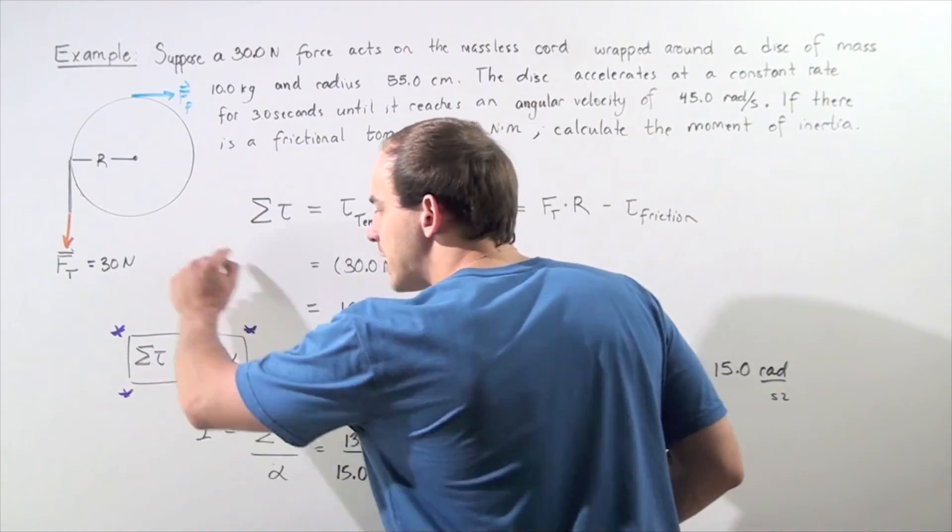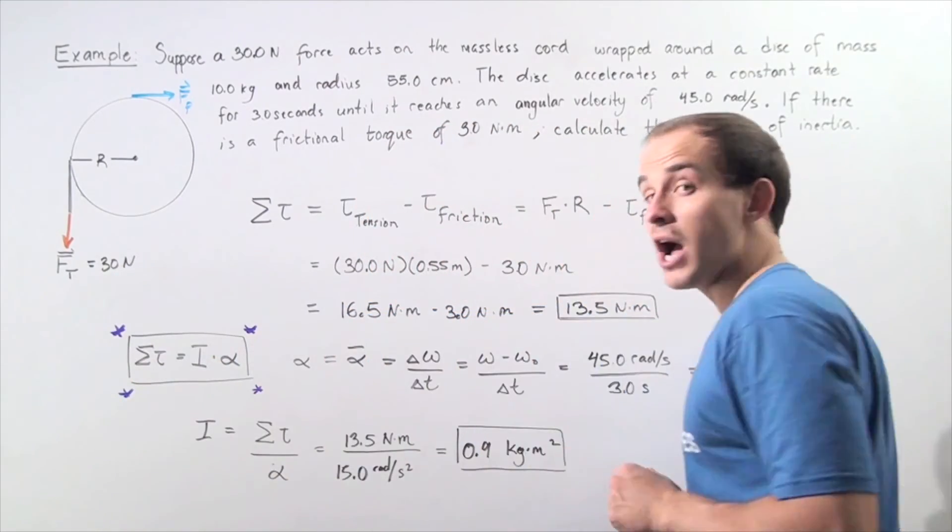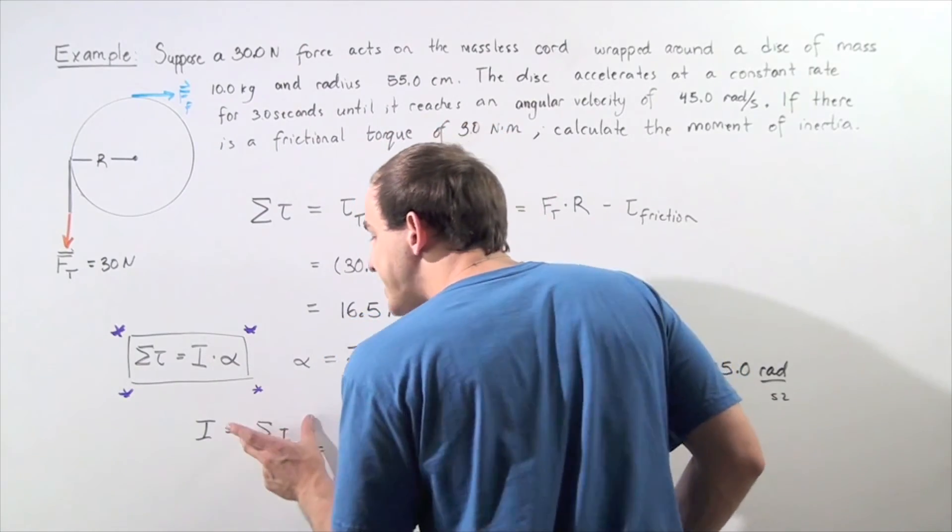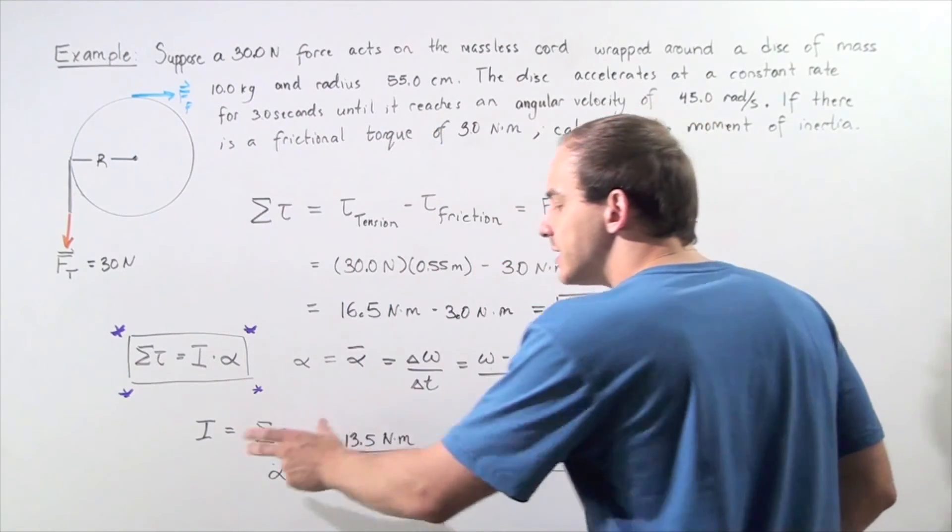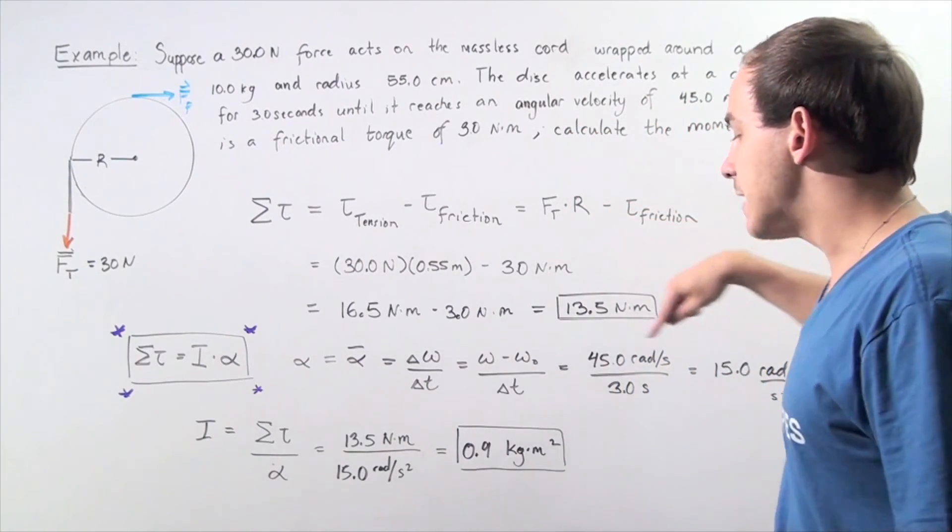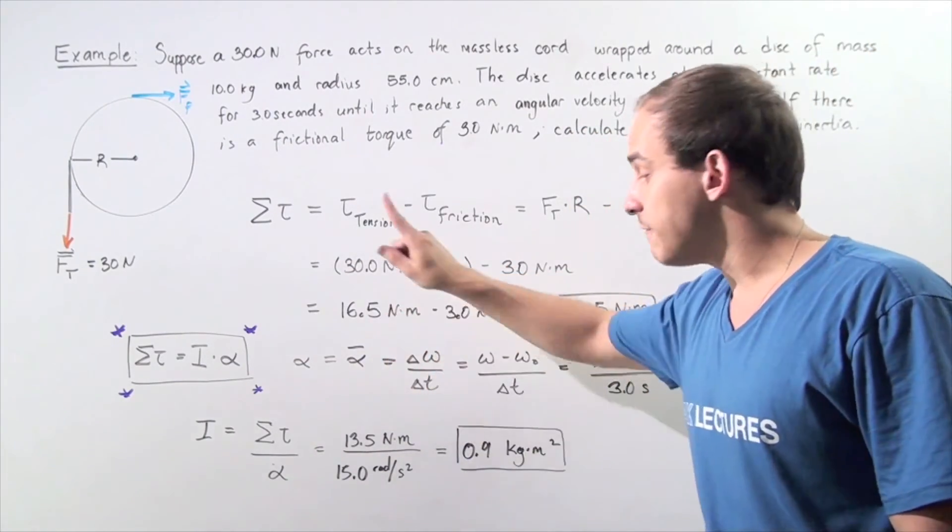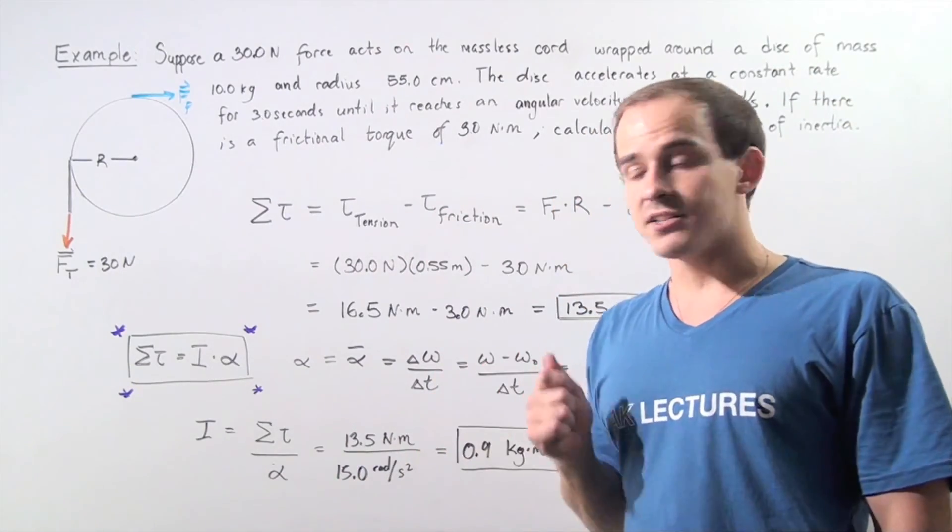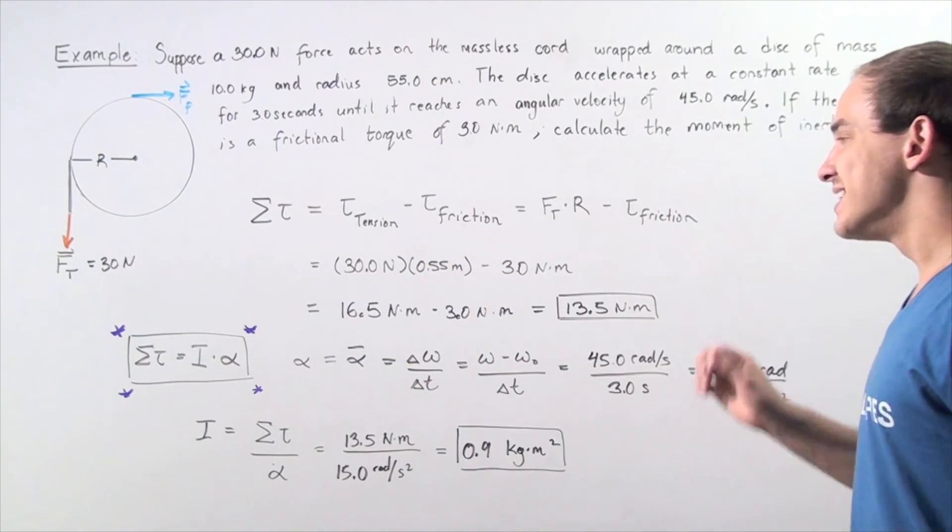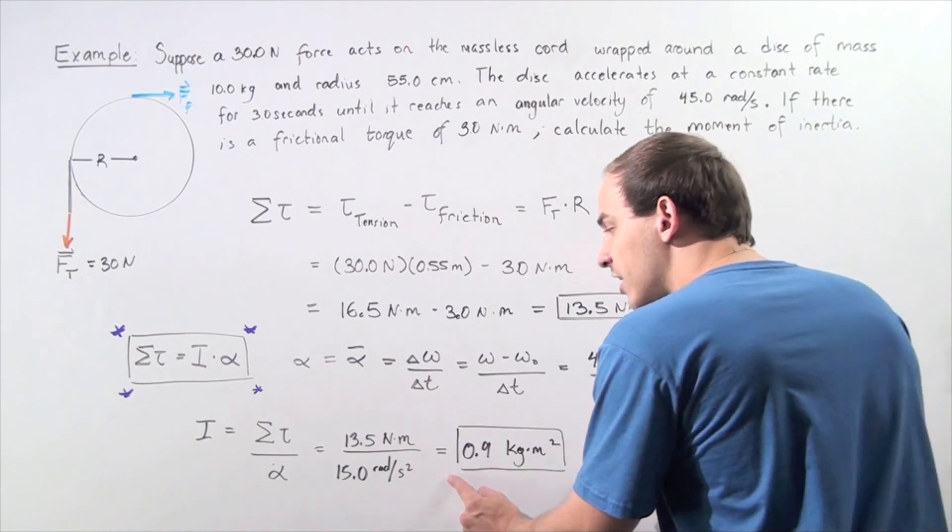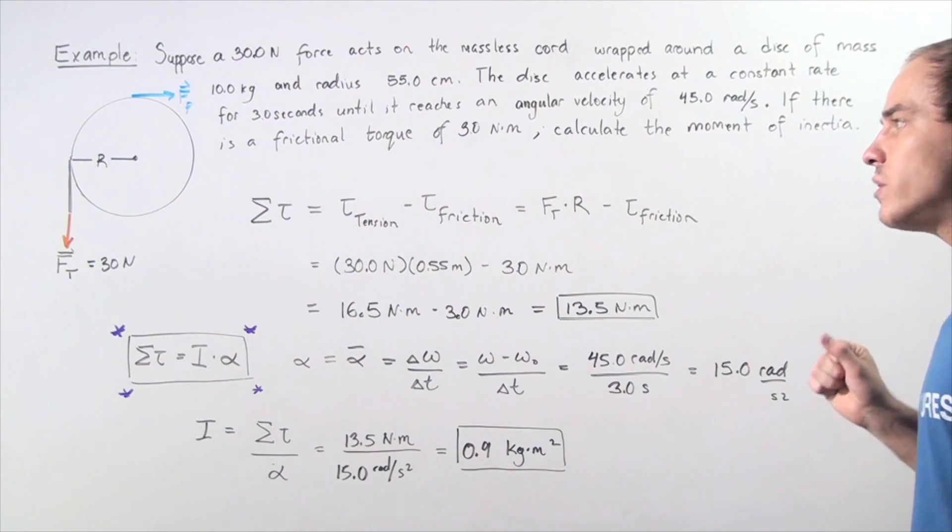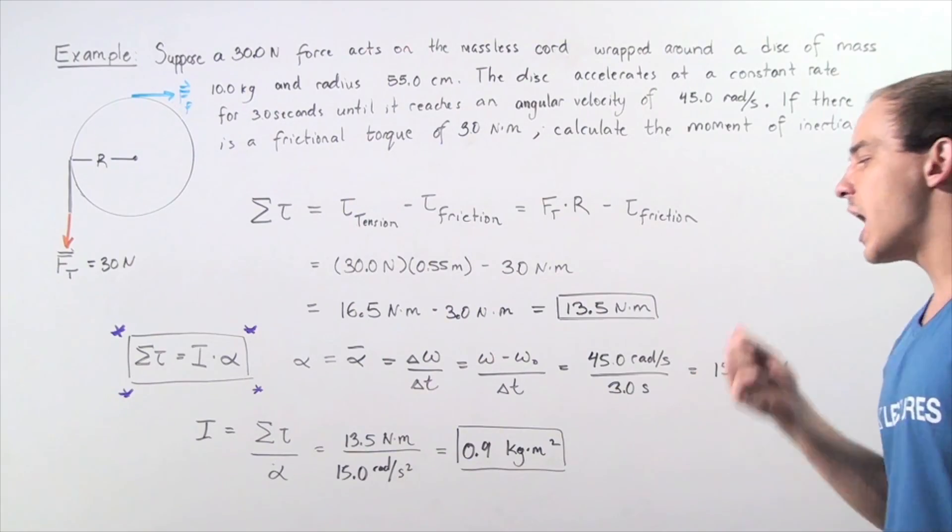Now we rearrange the equation and solve for I, the moment of inertia. The moment of inertia equals the net torque divided by the angular acceleration. We have 13.5 Newton-meters divided by 15 radians per second squared, which gives us 0.9 kilogram-meters squared. This is the moment of inertia, or rotational inertia, of the object.